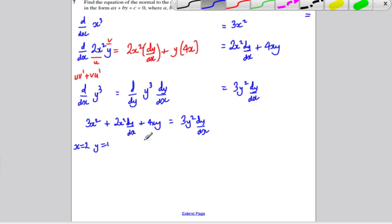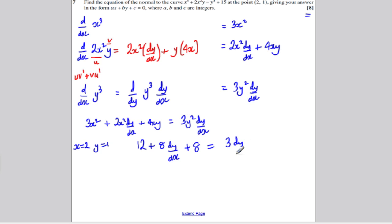So x² would be 4 and 3 lots of 4 would be 12. x² is 4 and 2 lots of 4 would be 8. So you'd have 12 plus 8 dy/dx. 4 times 2 times 1 is simply 8. So you'd have plus 8. y² would be 1. 3 lots of 1 would be 3. So you'd have 3 dy/dx.